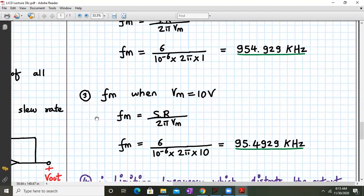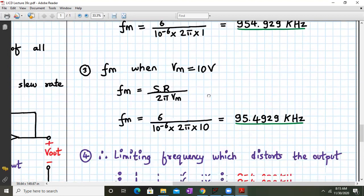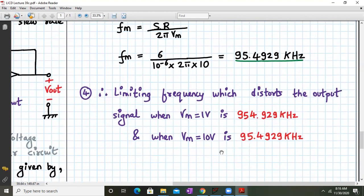Okay. Now, at Vm equal to 10 volts, the corresponding frequency can be evaluated as follows. Here, only in place of Vm, we substitute 10. So that number becomes, the earlier result will be divided by 10, which will be 95.4929 kilohertz. Okay. And the last concluding remark is this. That the limiting frequency which distorts the output signal when Vm is 1 volt is 954.929 kilohertz. And when Vm is 10 volt is 95.4929 kilohertz. Okay.